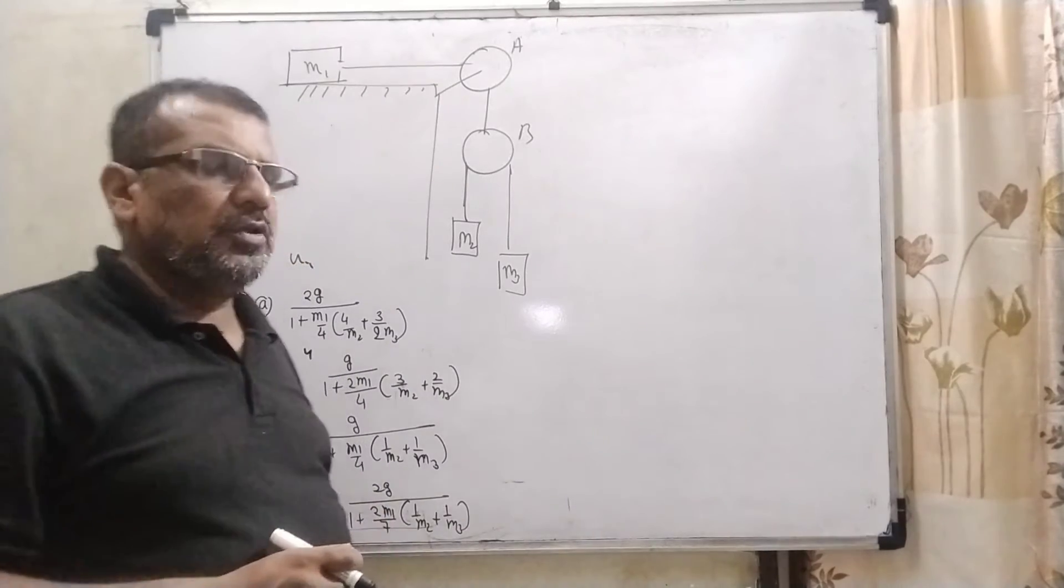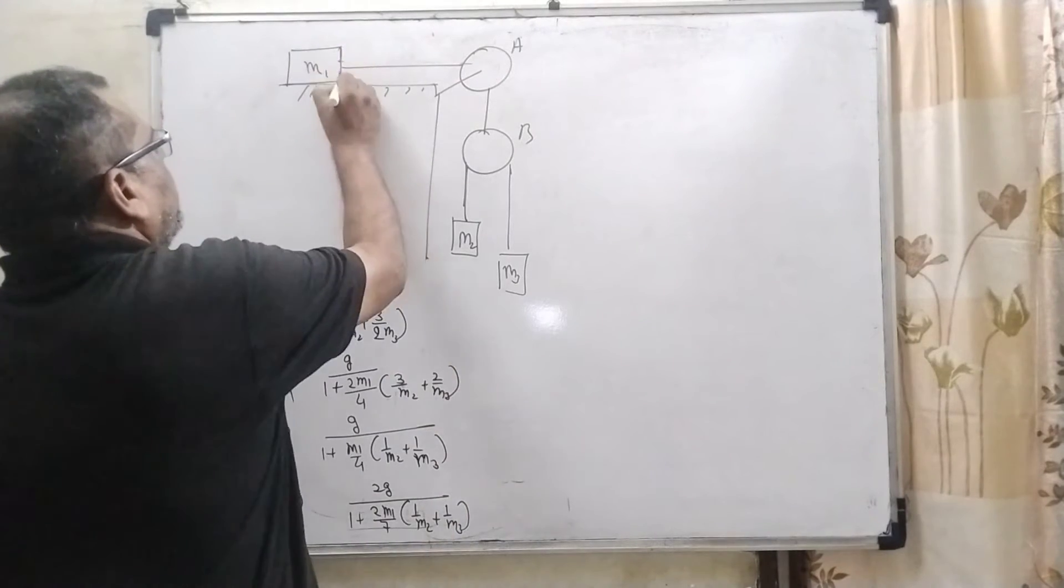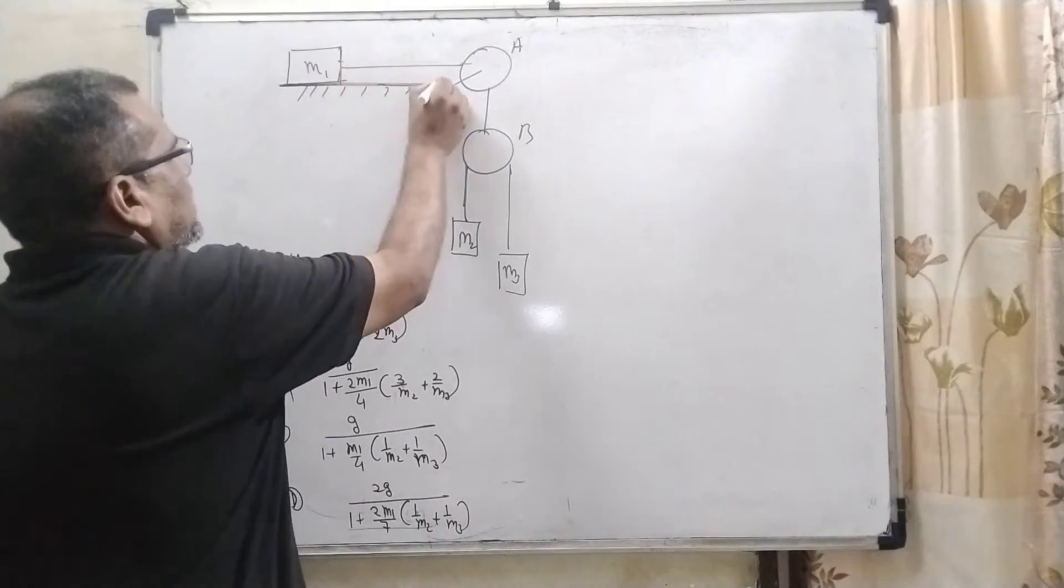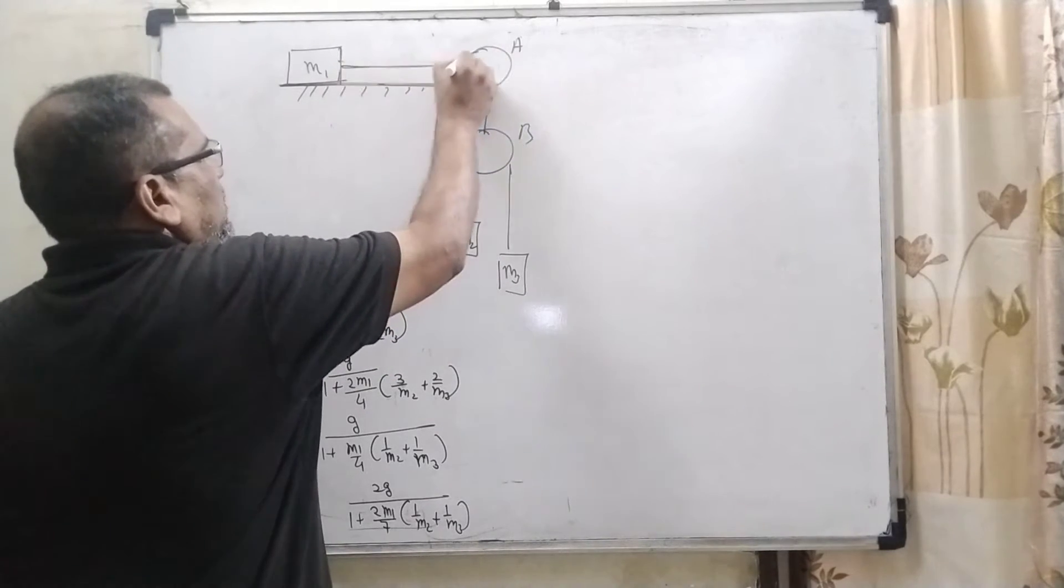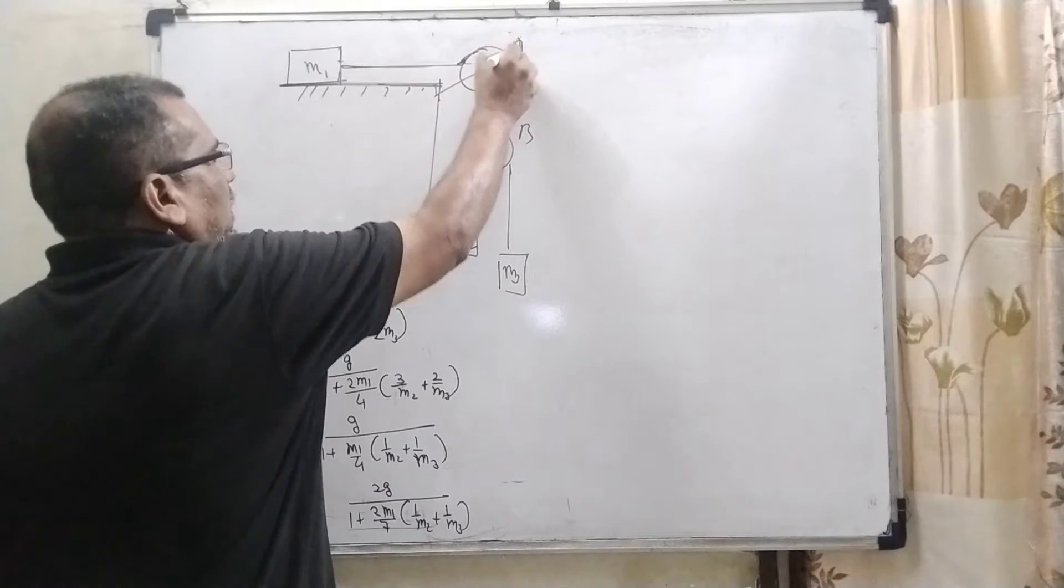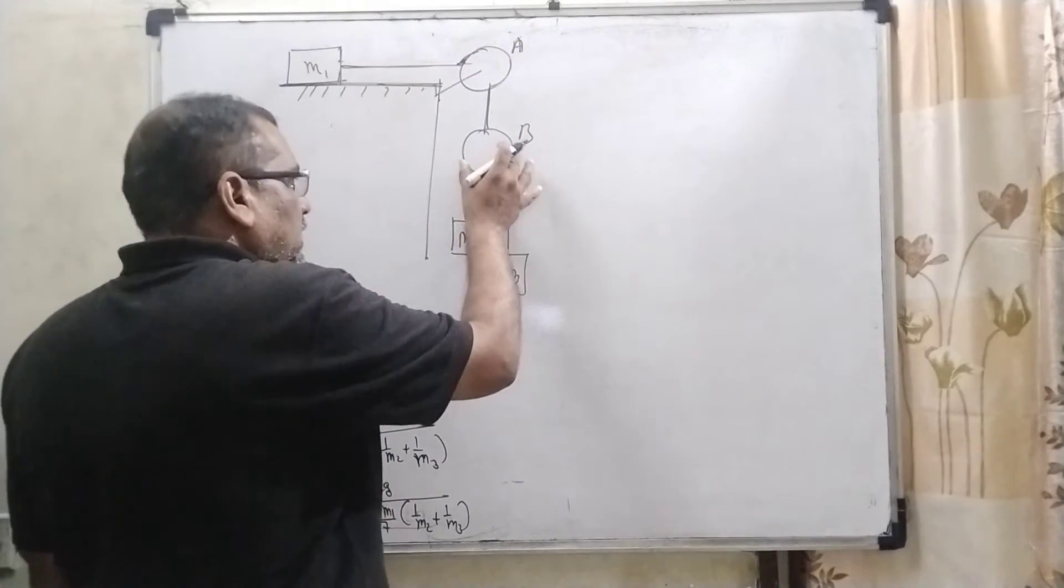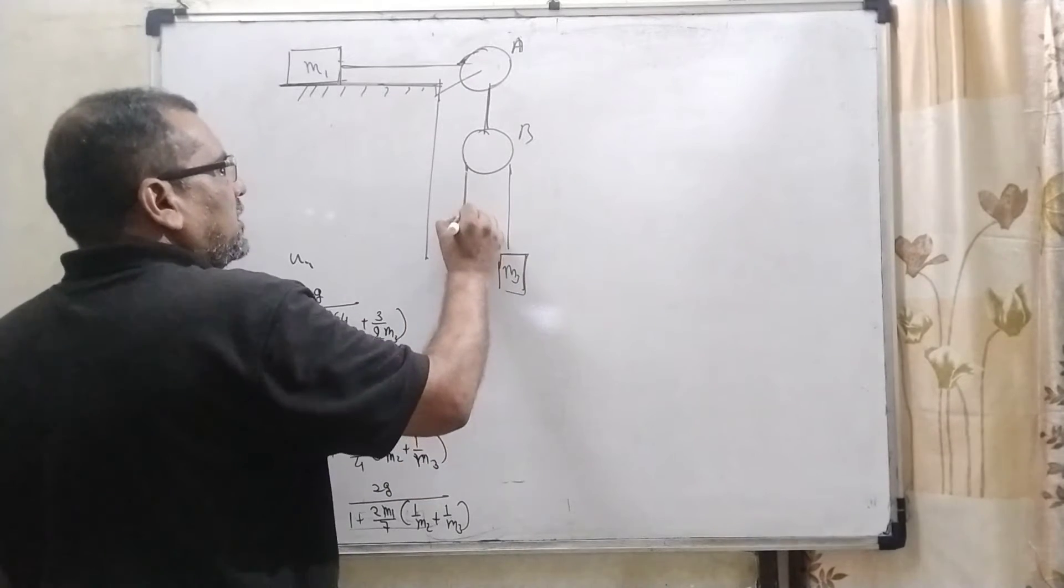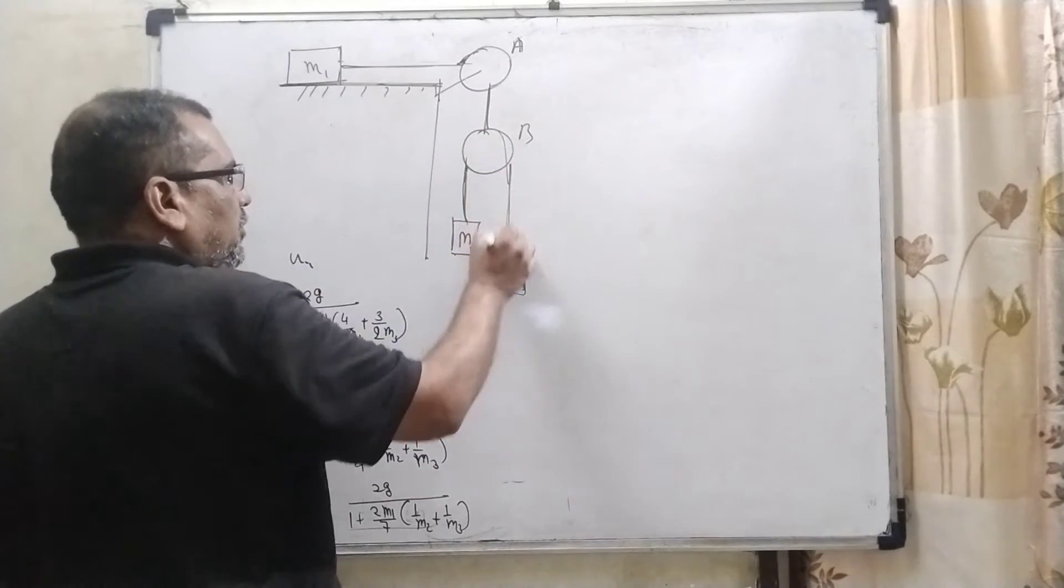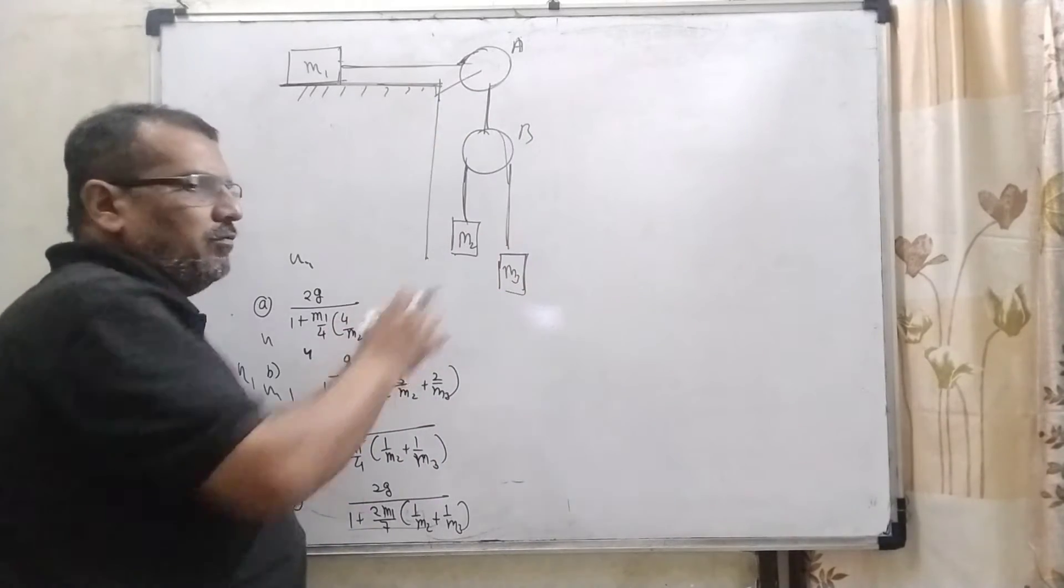Before solving the question, we have to understand what the question says. Here, M1 kept on this table and here this string is passing over to the A pulley and which is connected to the B pulley. And this B pulley, which is connected with M2 and M3, two blocks that is passing the string over to the B pulley.